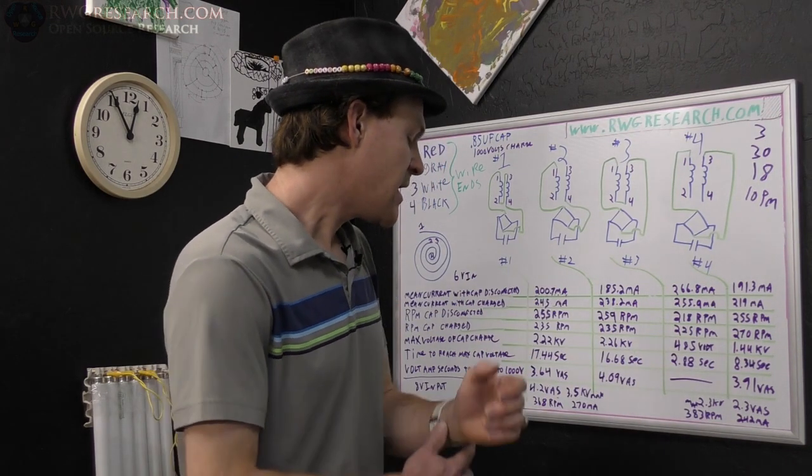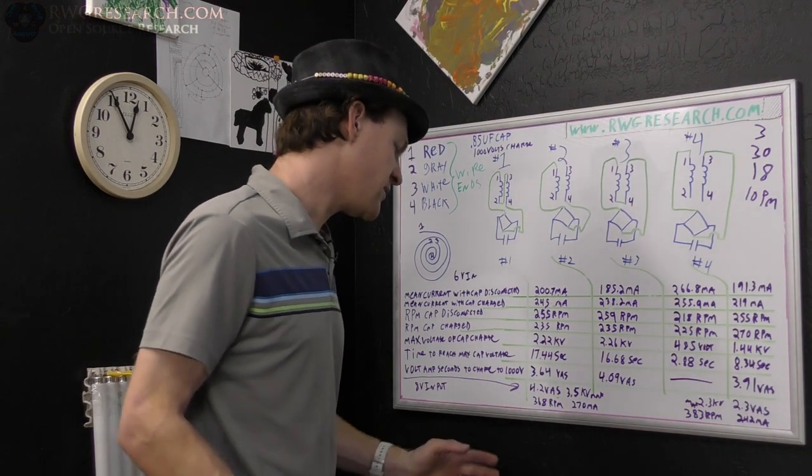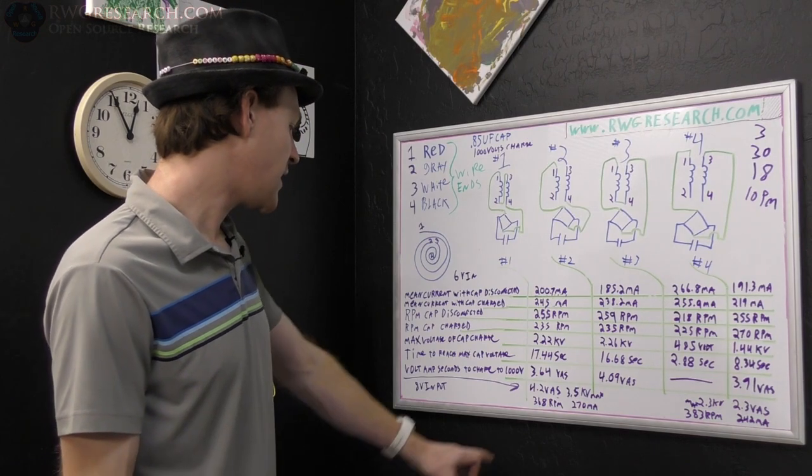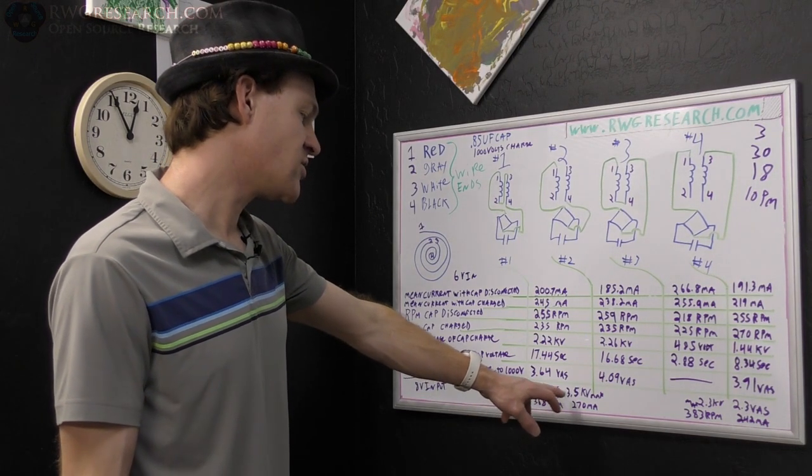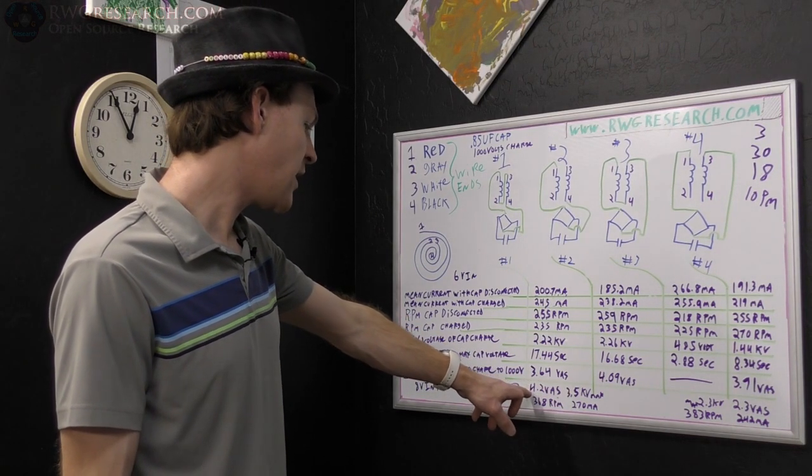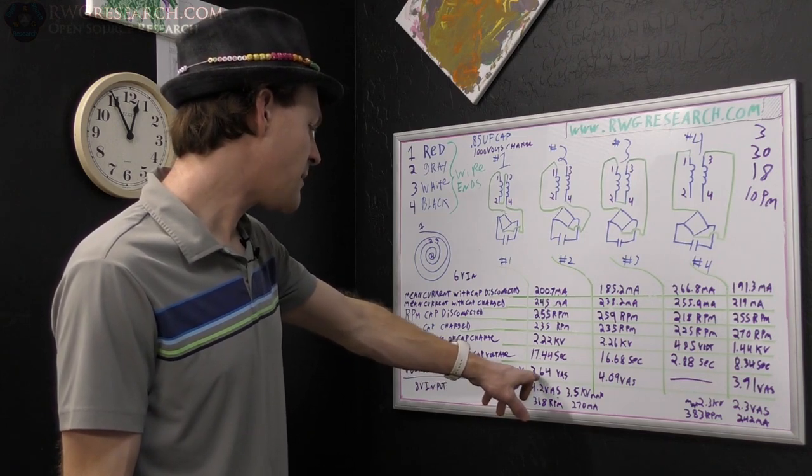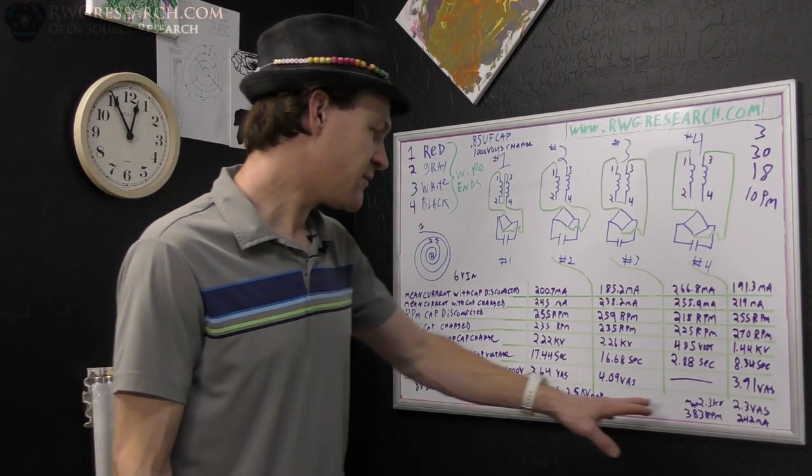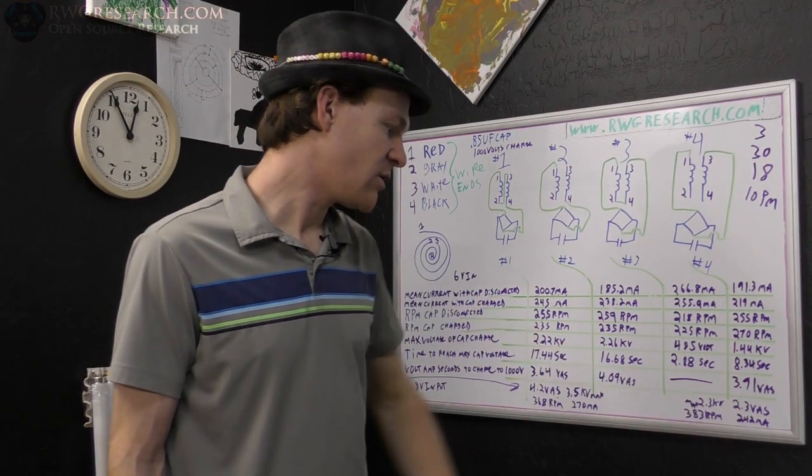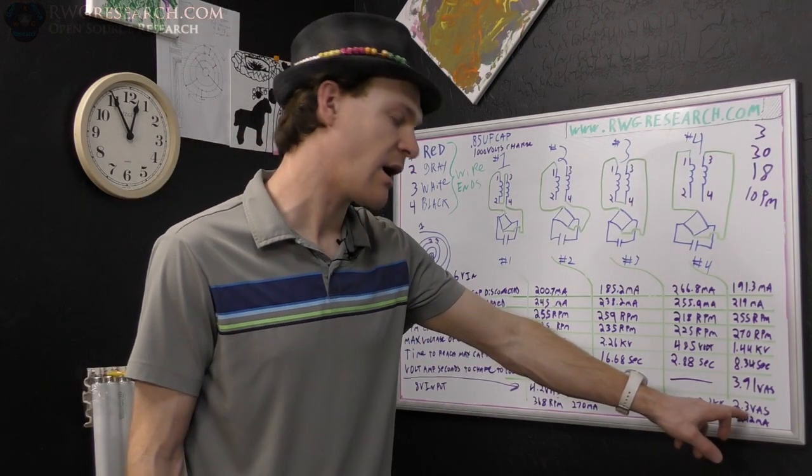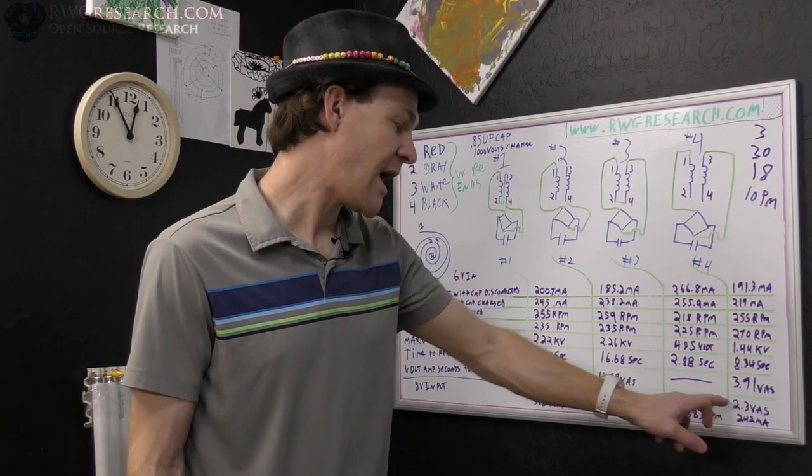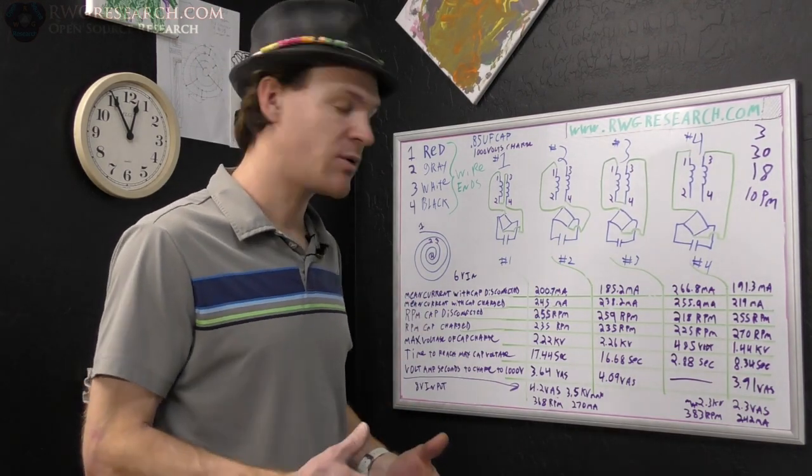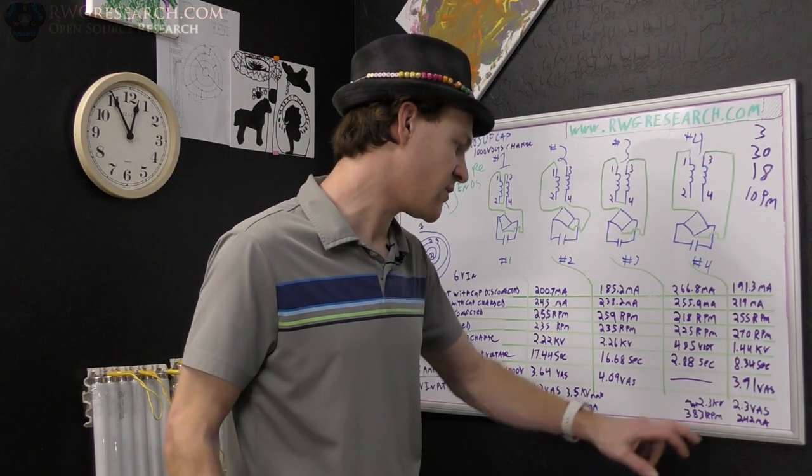Now the difference though is in our six volt input. We actually got a volt amp seconds to charge to a thousand volts of 4.2. Here we were at about 3.64. Now the big difference is here. Here it only took 2.3 volt amp seconds at a higher RPM.